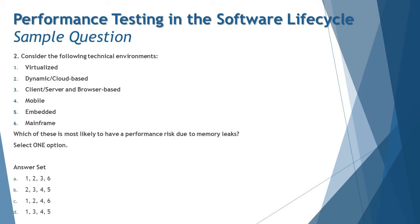Moving to question number two: consider the following technical environments, which we have already covered in our tutorials. We have: one, virtualized; two, dynamic or cloud-based; three, client-server and browser-based; four, mobile; five, embedded; and six, mainframe. Which of these is most likely to have a performance risk due to memory leak?